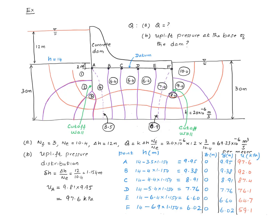Now you can plot the pressure distribution diagram by plotting these values at these points. The area under the pressure distribution diagram is the resultant uplift force.